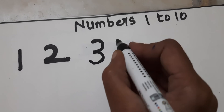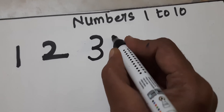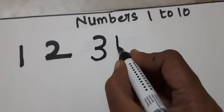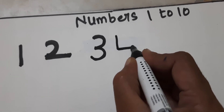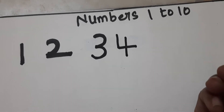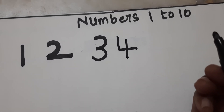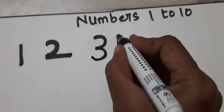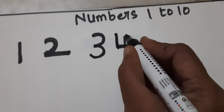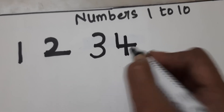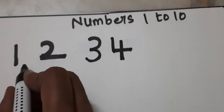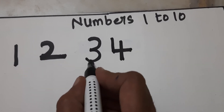Next, how to write 4? First we write standing line, then sleeping line, then again standing line — number 4. 1, 2, 3, 4.